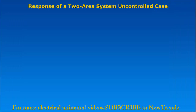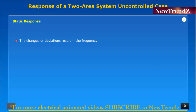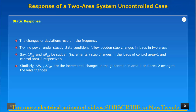For the response of a two-area system in the uncontrolled case, we consider both static and dynamic responses. For the static response, the changes or deviations in frequency and tie line power under steady-state conditions result from sudden step changes in loads in the two areas. Let Delta Pd1 and Delta Pd2 be the sudden incremental step changes in loads of control area one and control area two respectively. Delta Pz1 and Delta Pz2 are the incremental changes in generation in area one and area two.